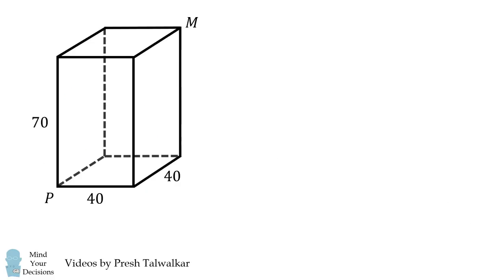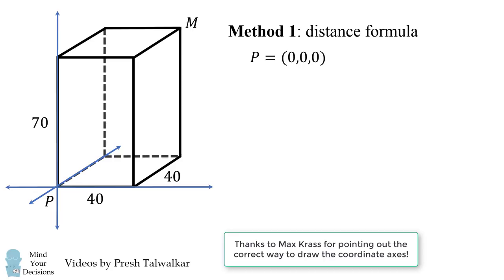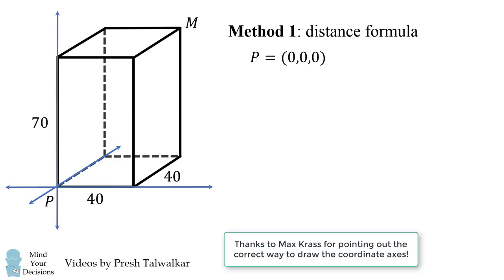One way to solve the problem is to use the distance formula. Imagine setting up a coordinate system. The point P can be placed at the origin (0,0,0). The point M would then be at a coordinate of (40, -40, 70).